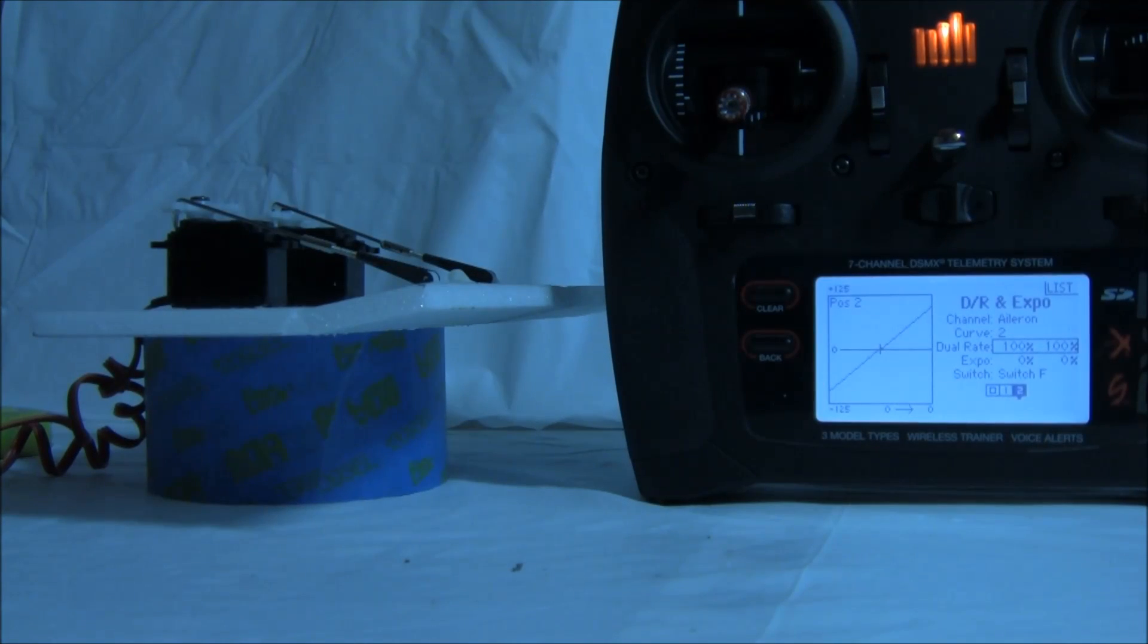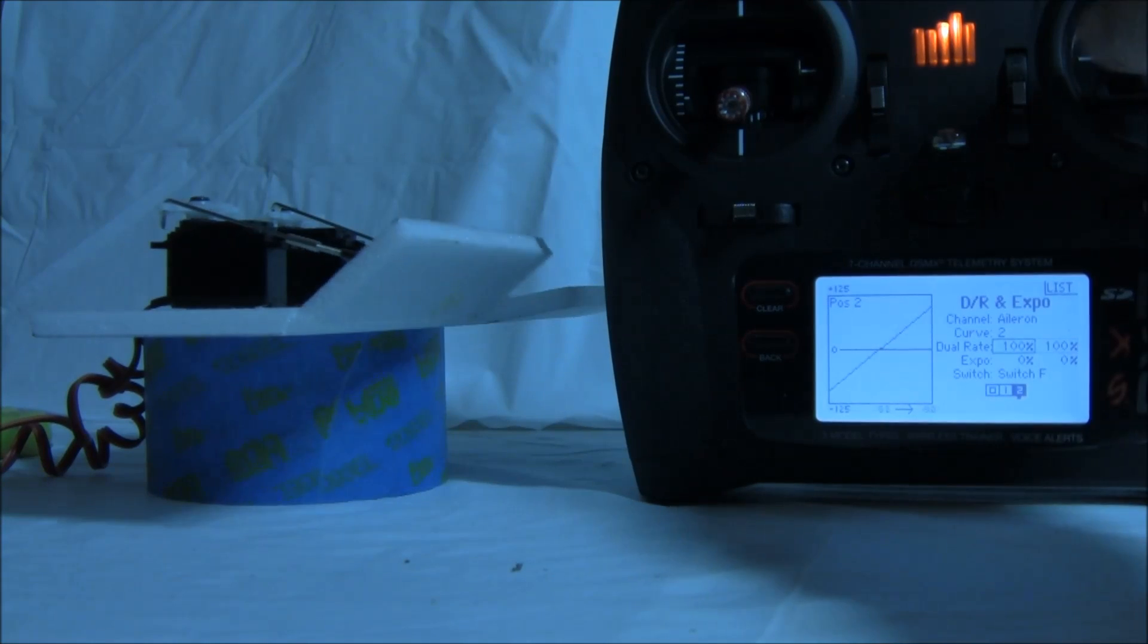You'll notice that our servo simulator is now in the screen and it's active. And right now we're at the high rate aileron. So if you move the aileron, here's the servo at high rate. Now let's see what that 50 percent does for it. Switch it to 50 percent.